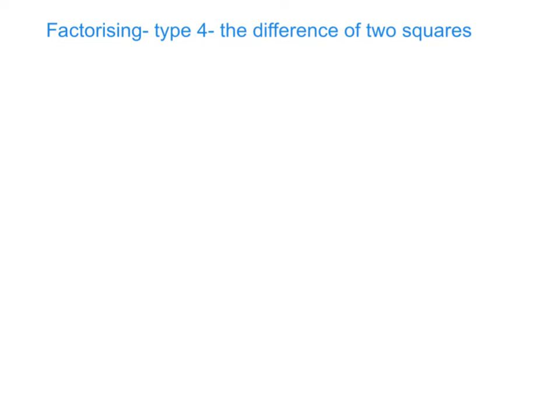Hi guys, so in this video I'm going to talk you through a couple of examples relating to factorising the difference of two squares, which we say is type number 4.